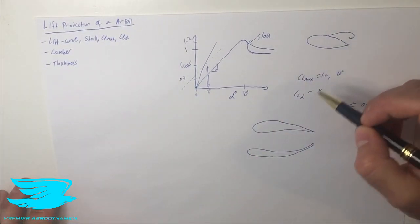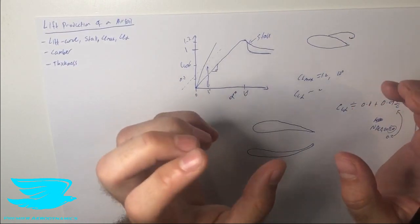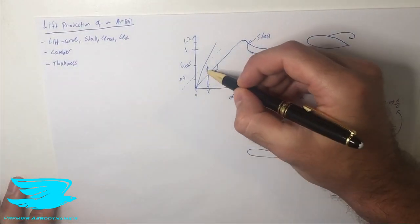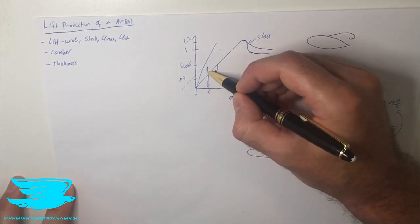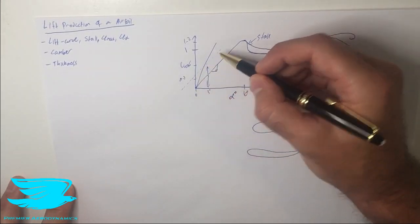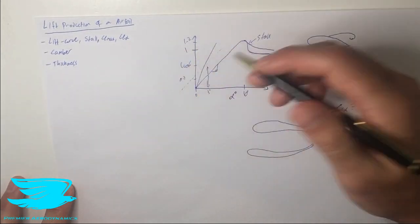In terms of camber, camber is again how much the airfoil is sort of flexed. And if we have camber, this then shifts this line up or down. It doesn't change the slope of it, it just changes where it occurs. So the CL alpha is still the same, it just moves up or down.